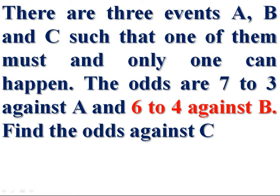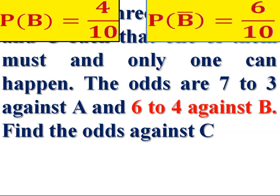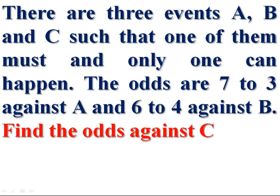And the odds are 6 to 4 against B. So the chance that B happens is 4 by 10, and the odds against B are 6 to 4. We are required to find out the odds against C.